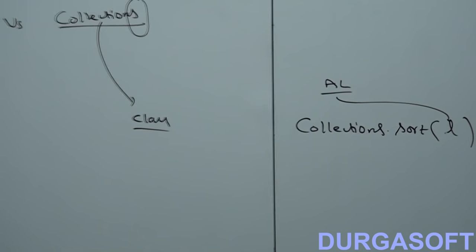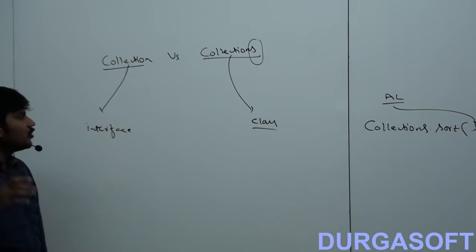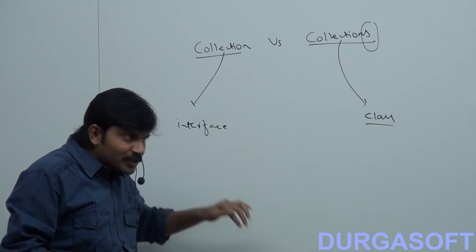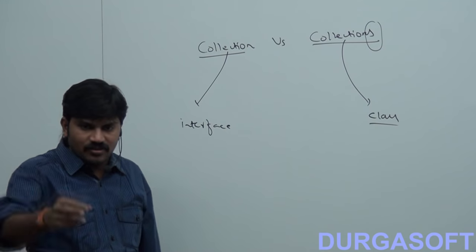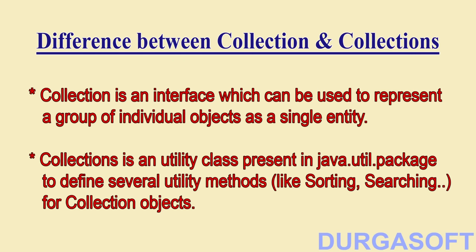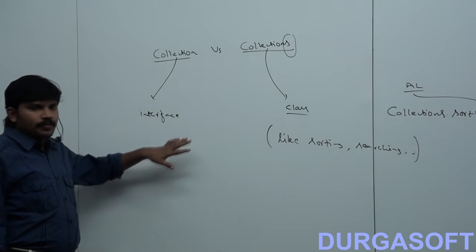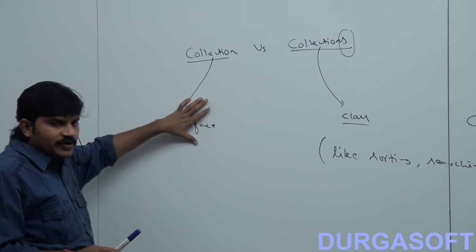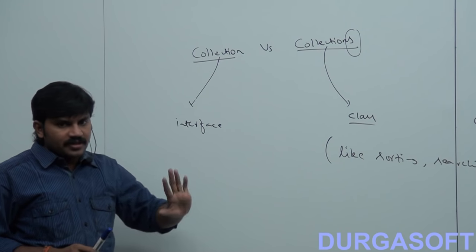So what is the difference between collection and collections? In a single line you can tell: collection is an interface, collections is a class. Collection interface purpose you know. What is the purpose of the collections class? So collection is an interface, collections is a utility class.